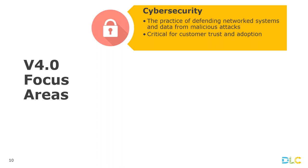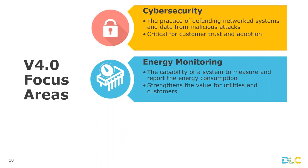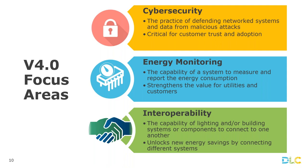The second focus area is energy monitoring, defined as the capability of a network lighting system to measure and report the energy consumption of each luminaire or group of luminaires. This data is valuable to utilities and energy efficiency programs as well as customers, and we can use it to strengthen the value proposition of the technology. The third focus area is interoperability: the capability of lighting and building systems and components to connect with one another and not just connect, but to operate together in a defined, predictable way.